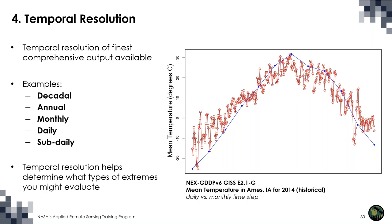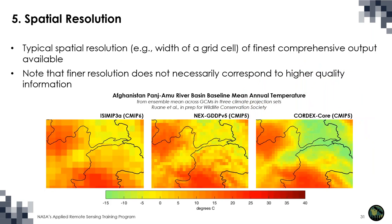The temporal resolution has fundamental implications for the types of analyses that can be done. The other key aspect of resolution is the spatial resolution of the climate projection set — typically defined as the width of a grid cell in kilometers or as a fraction of a degree latitude or longitude. It's important to note that finer resolution does not necessarily correspond to higher quality information. Different resolution datasets — such as the ISIMIP data at around half a degree, quarter degree data, and CORDEX core data at around one degree — show how we capture different mountains and valleys in a given region and the temperatures associated with them.